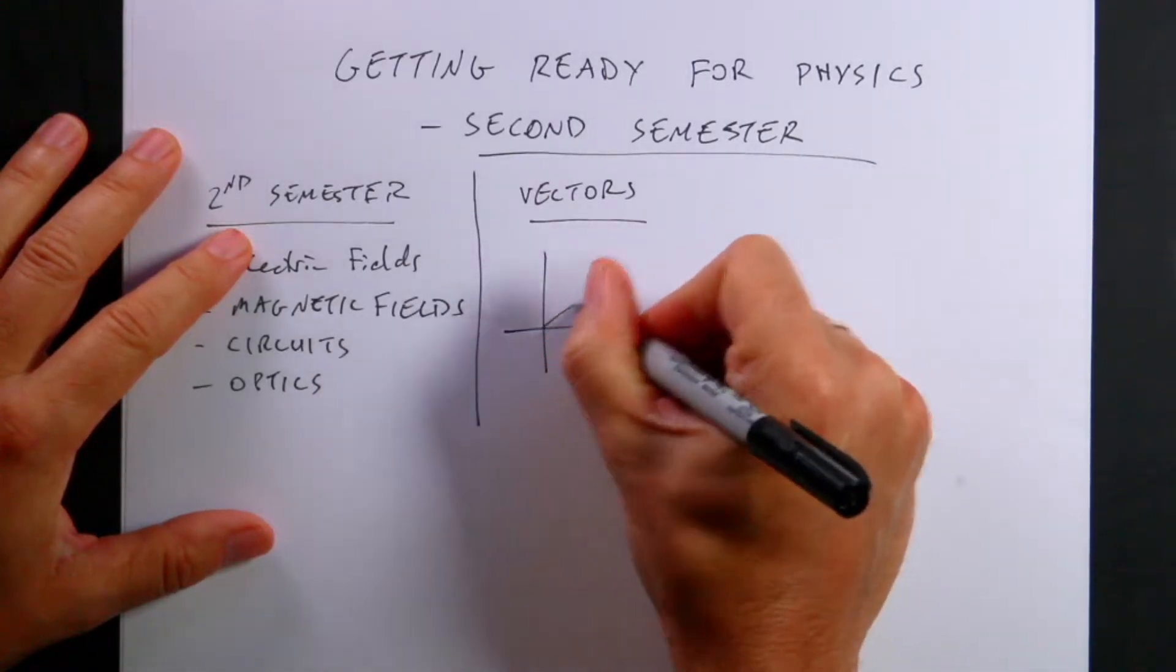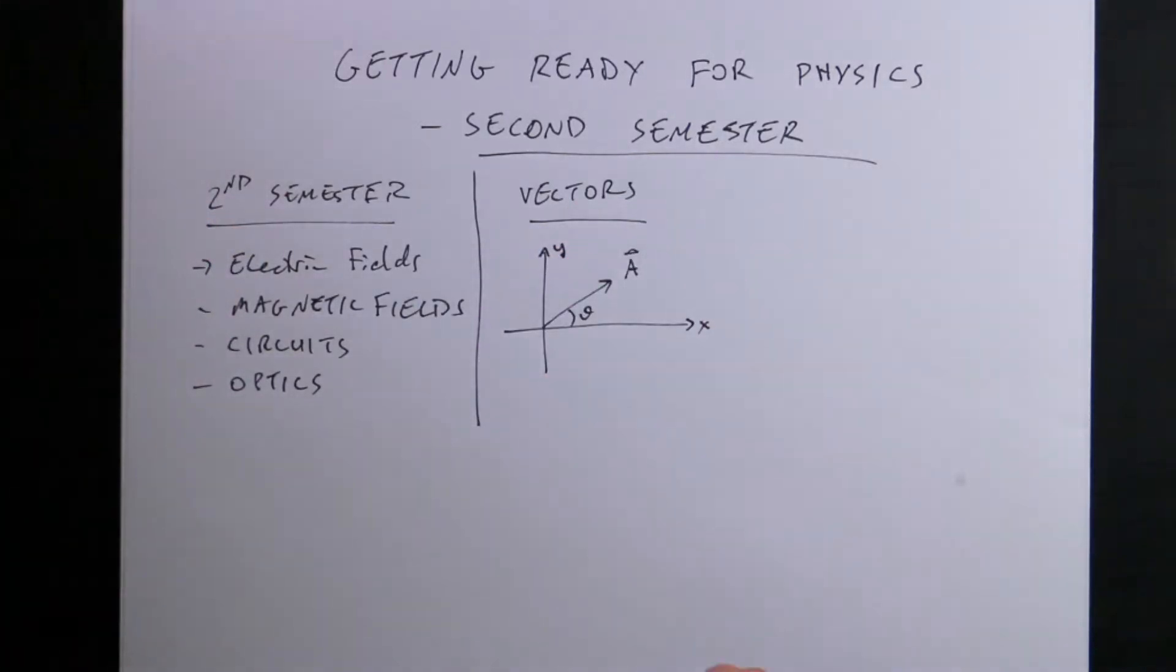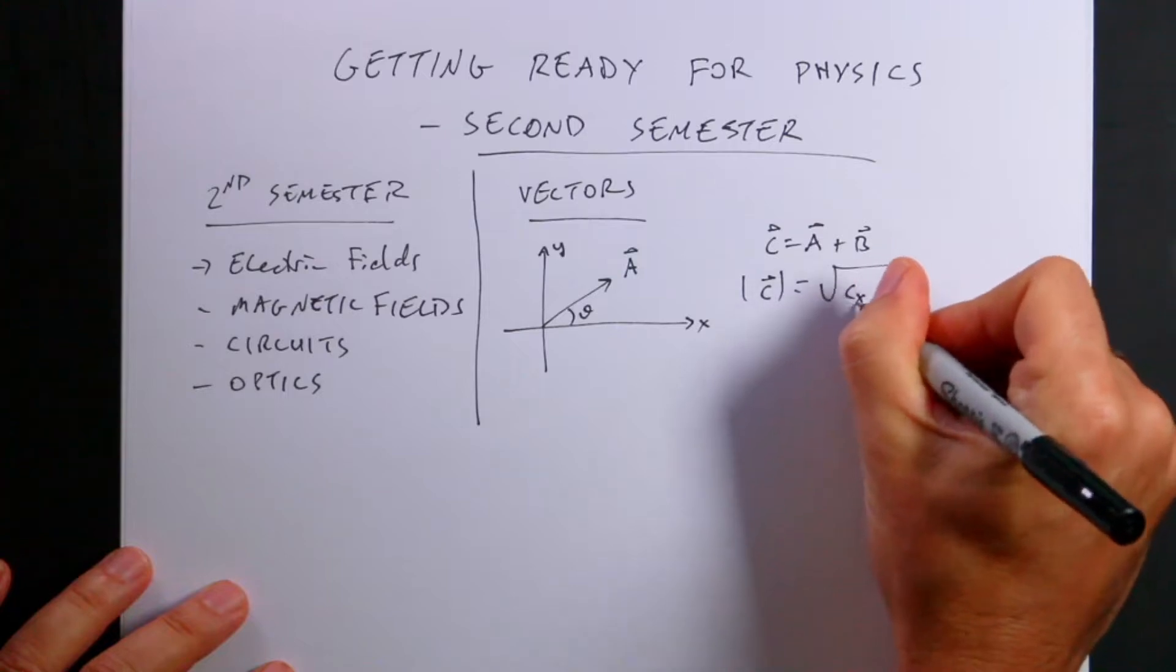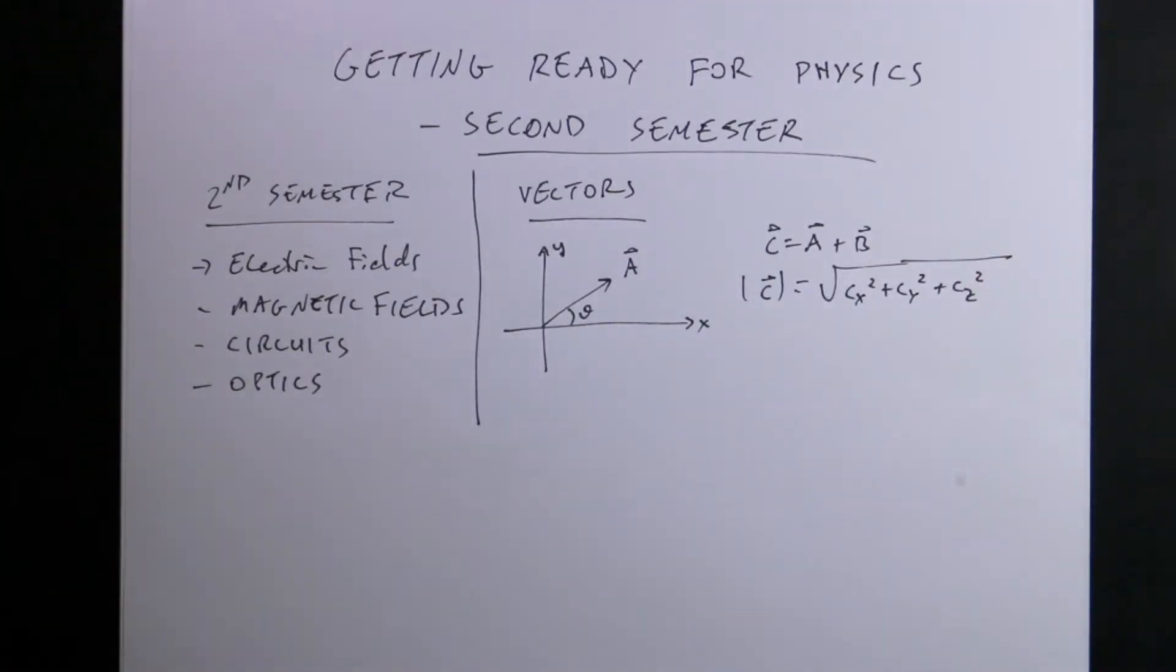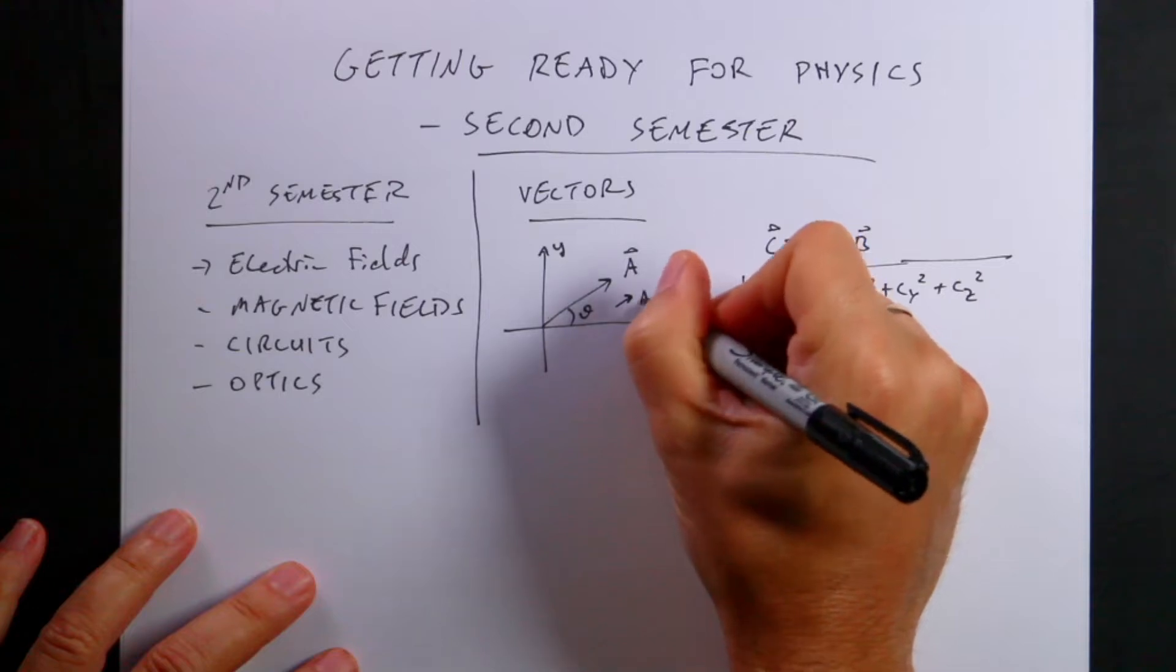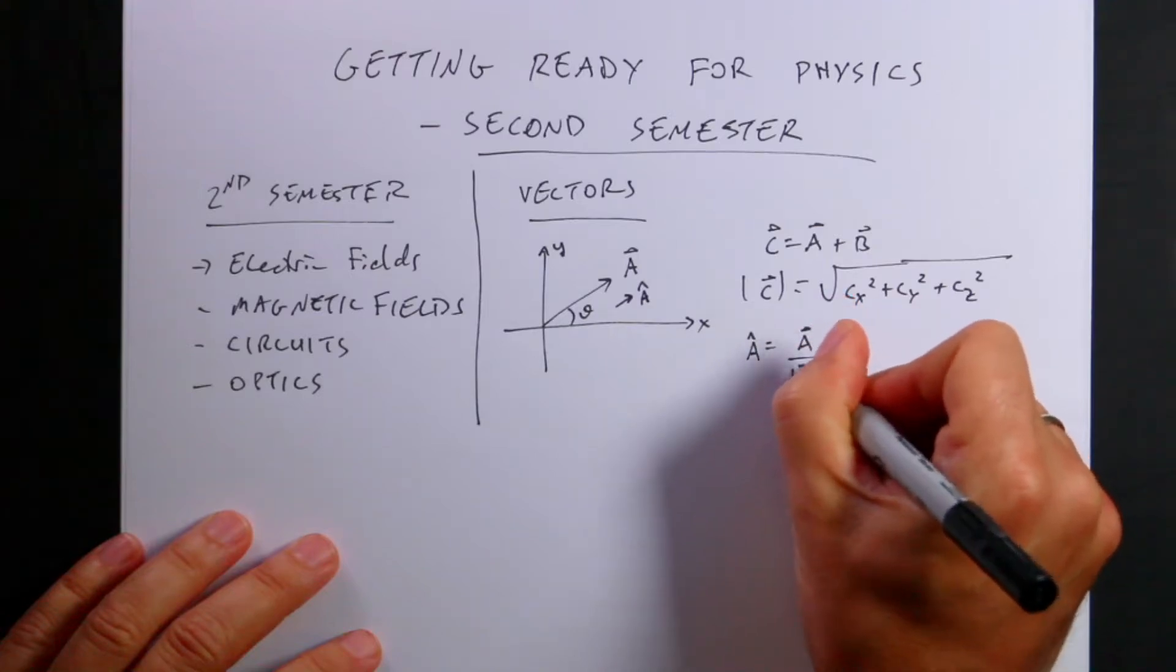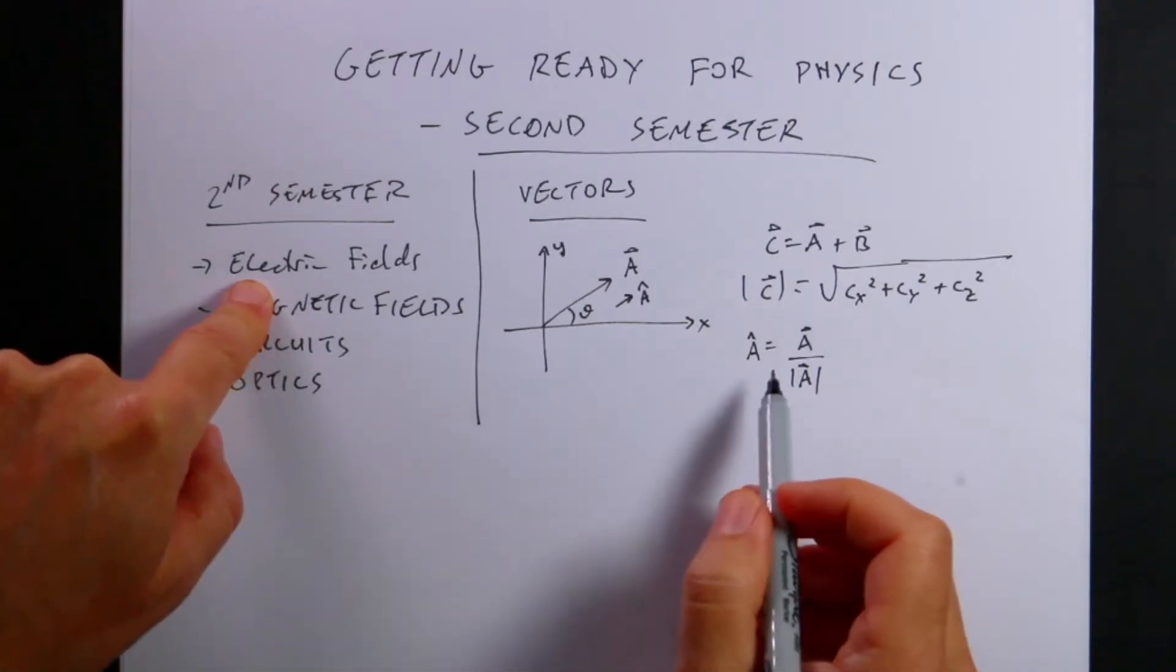What kind of things you need to know with the vector? So here's a vector, a vector a at some angle theta. It has an x and a y and a z component. You need to be able to add vectors. You can say c equals a plus b. You need to find the magnitude of a vector. The magnitude of c is going to be the square root of cx squared plus cy squared plus cz squared. You might need to know about unit vectors. It depends on the course.